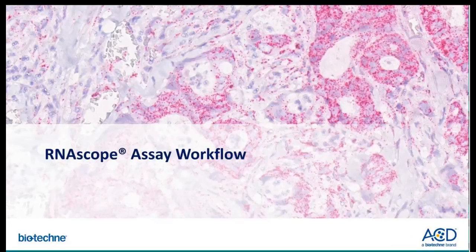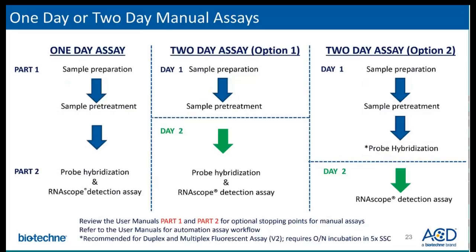RNAscope assay workflow: you may perform the assay as a one-day assay, though there are options to split the protocol into two days. The first option is to complete sample preparation and pretreatment on day one, then begin probe hybridization and detection the following day. The second option is to complete sample preparation, pretreatment, and probe hybridization on day one, then incubate the slides overnight in 5x SSC (saline sodium citrate solution). The following day, remove slides from 5x SSC, wash with wash buffer, and then follow with the amplification reagents.